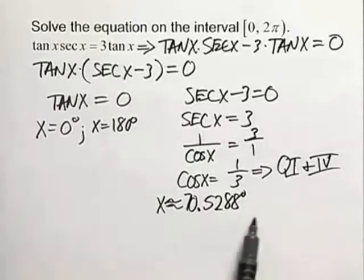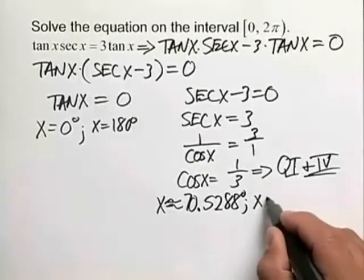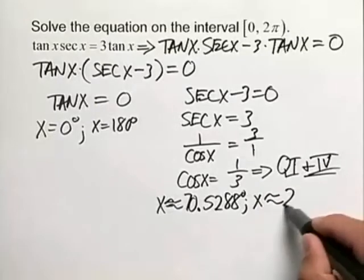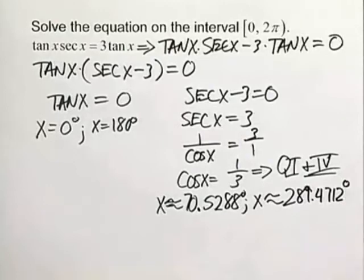Now note because that's in quadrant 1, that is in fact our reference angle and we'll use that reference angle to find our solution in quadrant 4. So in quadrant 4 our solution is approximately 289.4712 degrees.